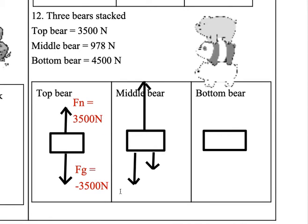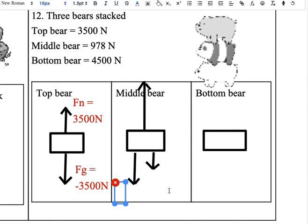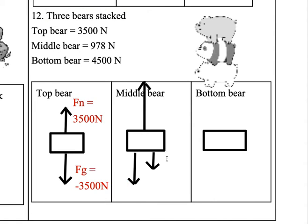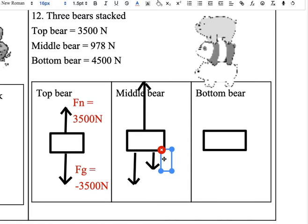And grading-wise this would be like a one point thing - it'd be like the difference between a three and a four and not the difference between a four and a two. Okay, so for middle bear - middle bear weighs 978 newtons, so that means that Fg equals negative 978 newtons.